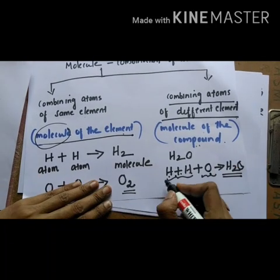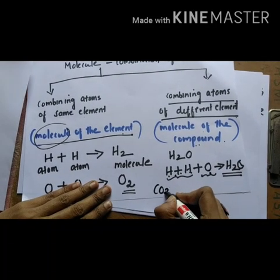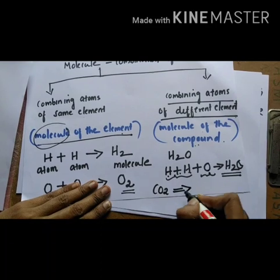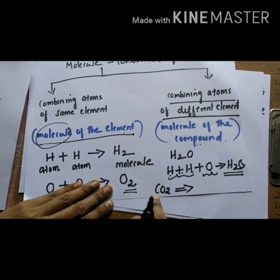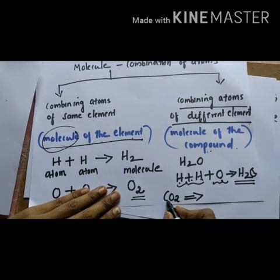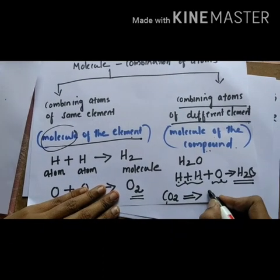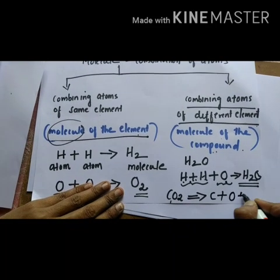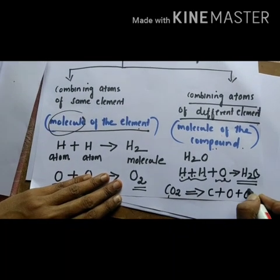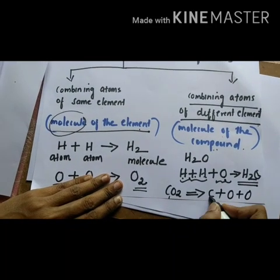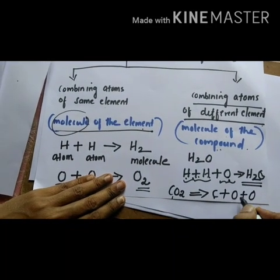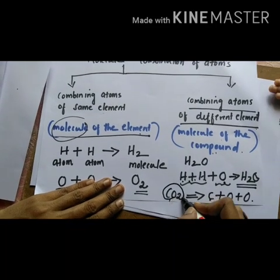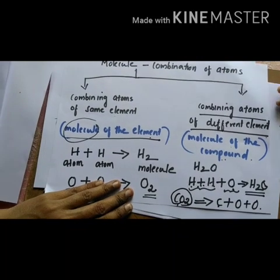Similarly, Carbon Dioxide is formed by combining one Carbon atom (C means one Carbon atom) and two Oxygen atoms (O2 means two Oxygen atoms). So one Carbon atom and two Oxygen atoms combine to form the Carbon Dioxide molecule CO2. This is an example of combining atoms of different elements to form a molecule of a compound.